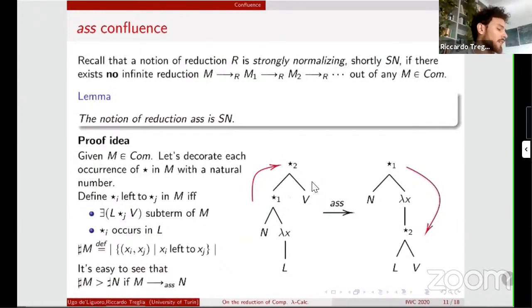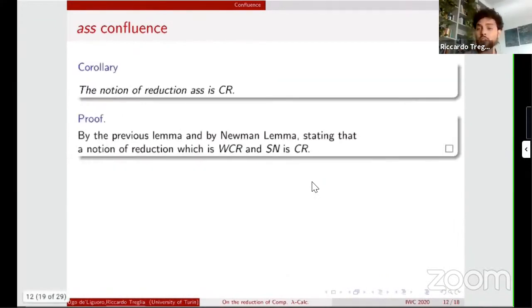And thanks to that, we depict our terms like trees, where the root is this principal bind operator. So decorating each occurrence in the term of the bind operator, we can notice that while performing the AS reduction, there is a clockwise movement inside the tree. Defining another well order relation left-to, we can notice that this clockwise movements are finite, since every term is finite. So in the end, we reach that AS reduction is strongly normalizing.